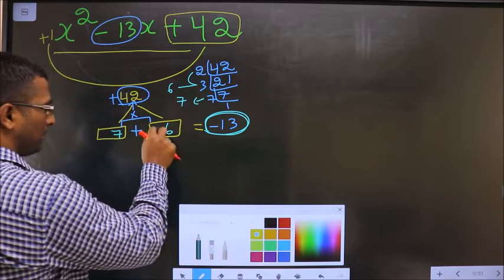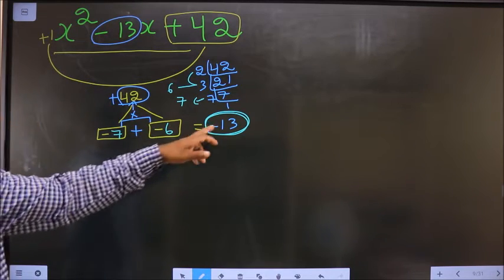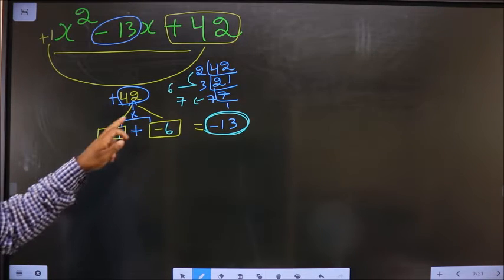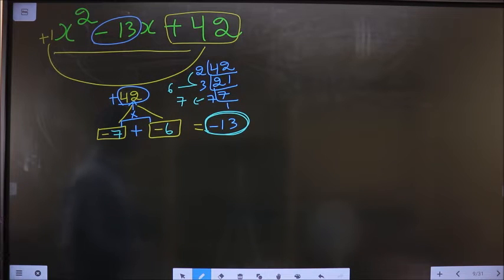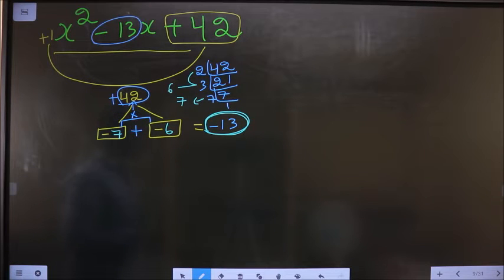To get -13 it should be -7 minus 6, only then I get -13, and -7 into -6 is +42. Now the signs are also adjusted.